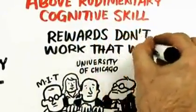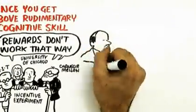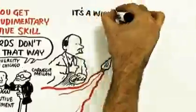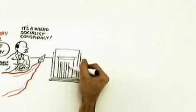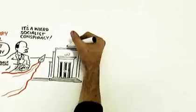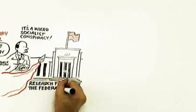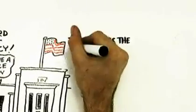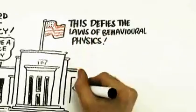The idea that these rewards don't work that way seems vaguely left-wing and socialist, doesn't it? It's kind of this weird socialist conspiracy. For those of you who have those conspiracy theories, I want to point out the notoriously left-wing socialist group that financed the research, the Federal Reserve Bank. So this is the mainstream of the mainstream coming to a conclusion that's quite surprising. Seems to defy the laws of behavioral physics. So this is strange.